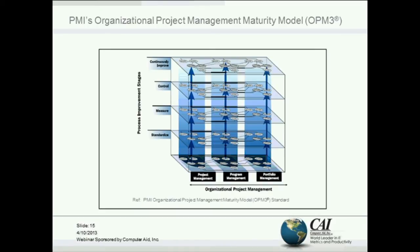PMI has an Organizational Project Management Maturity Model — what they call OPM3 — and they use essentially the same kind of model. Instead of five levels they've simplified it down to four, assuming most people today are not at the chaotic level with zero processes. So the first level is to standardize, the next is to put in measures, the third is to control, and the final level is again continuous improvement. They've also added further dimensions: as well as project management, the model covers program management and portfolio management levels.